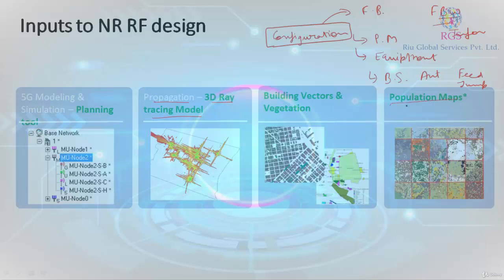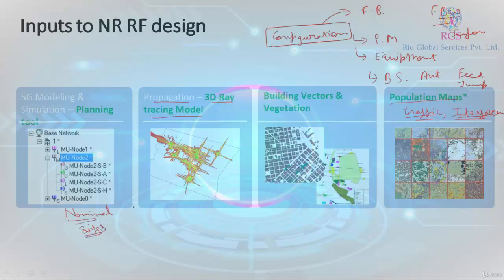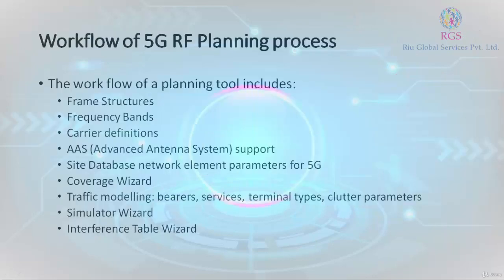Then we have traffic files — the population map, also known as the traffic map — and optionally an interference matrix. Your interference matrix and traffic files can be included. Finally, the most important input is your nominals: where exactly you are trying to plan your sites. You can place sites on the nominals, or identify useful areas and place sites manually. This is how the inputs to the planning tool are defined. Now let's look at the workflow for 5G RF planning.